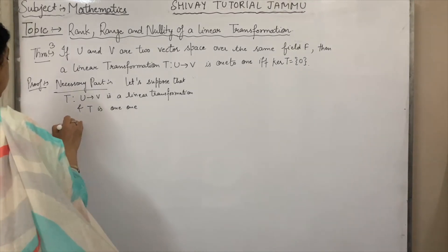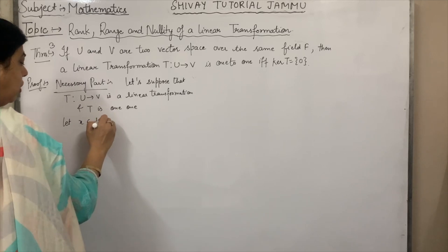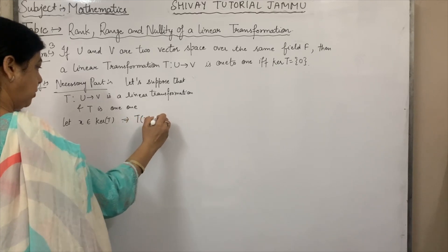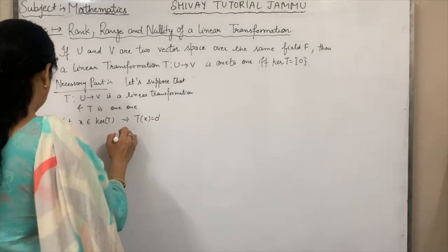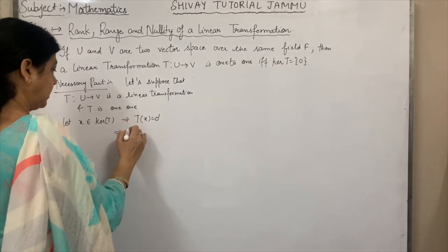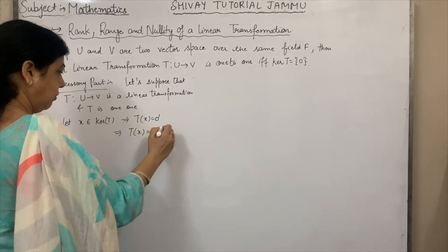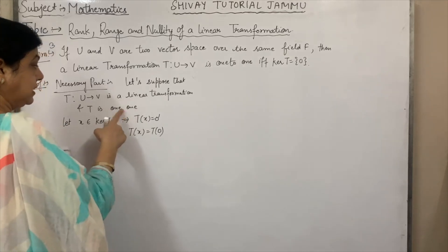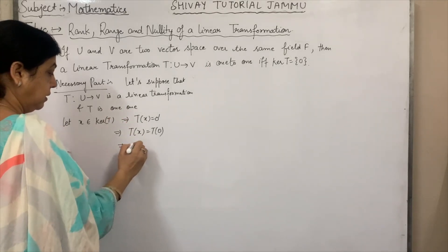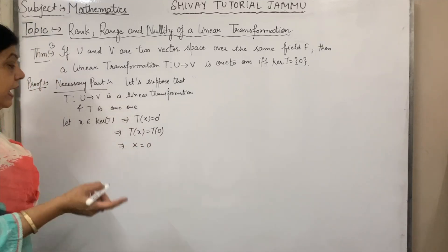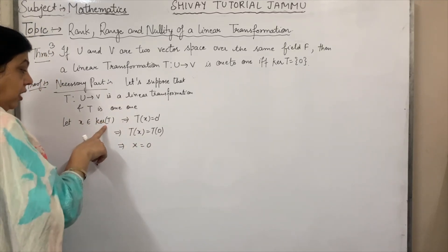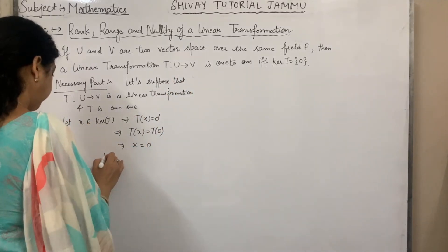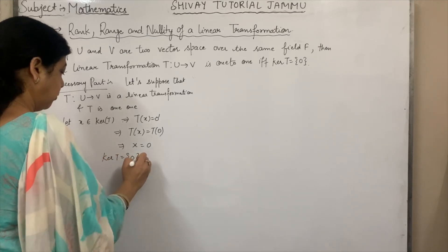Let any element X belong to kernel of T. Then T(X) = 0dash. I can write it as T(0), because zero dash means the transformation of the zero element. And because T is one-to-one, T cancels, and this implies X = 0. If I take any element X in kernel of T, then it must be zero. Therefore, kernel of T has only one element, that is zero.